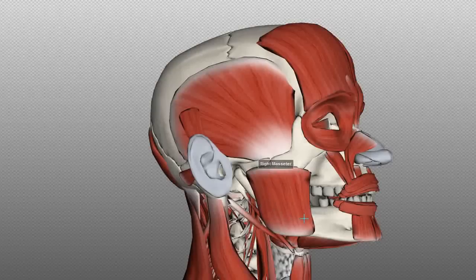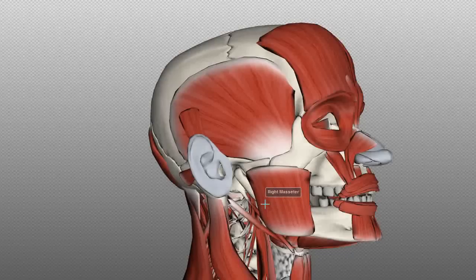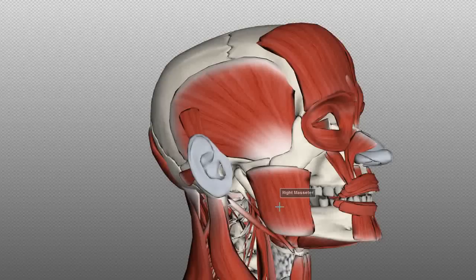This is also a muscle you can feel on yourself — if you put your fingers over the angle of your mandible and clench your teeth together, you can feel this muscle working. What this muscle does is it elevates the mandible.